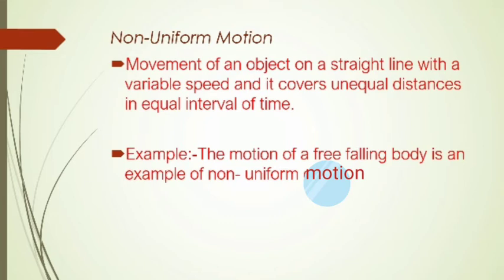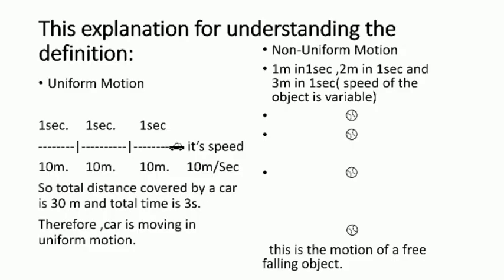For example, the motion of a free falling object. We can understand by explaining this. An object is falling from 6 meters height.